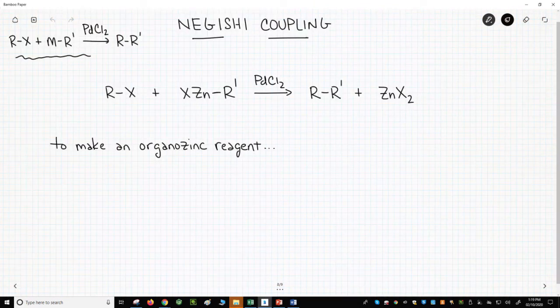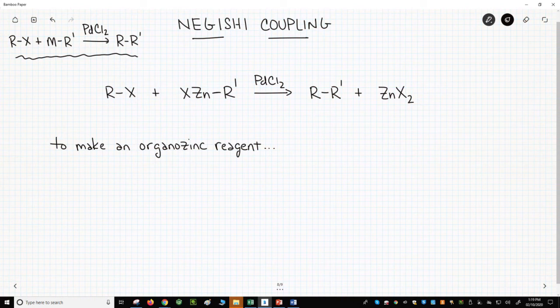In the far upper left corner, we have the simple model of a cross-coupling reaction. In the main part of the screen, we have essentially the same reaction, but the metal reagent, MR', has been replaced with an organozinc reagent.